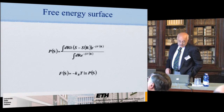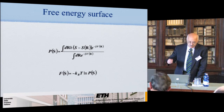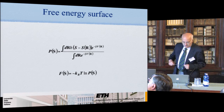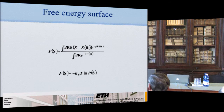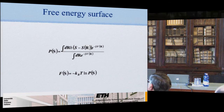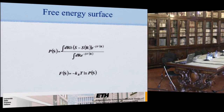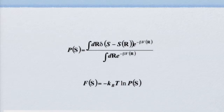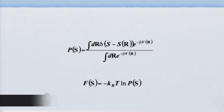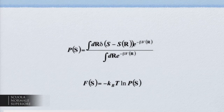The free energy surface is minus k_B T times the logarithm of the probability distribution. When there is high probability, there is a minimum; when there is low probability and you have a saddle point, that gives you an idea of the transition state. As an example, I take alanine dipeptide, which many people have studied. The conformation of the alanine dipeptide can be described in terms of the two Ramachandran angles.